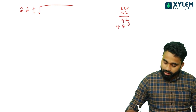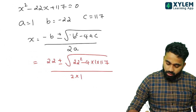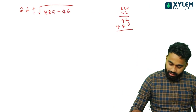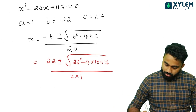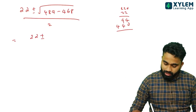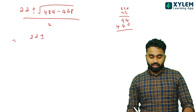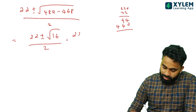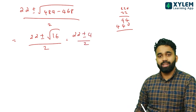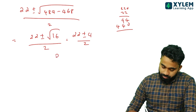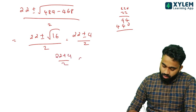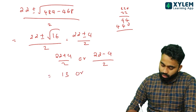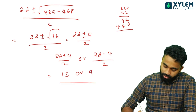22 plus or minus root of 22 squared minus 4 times 1 times the constant, all divided by 2 into 1. That gives 22 plus or minus root of 484 minus something, divided by 2. The answer is 22 plus 4 over 2 or 22 minus 4 over 2, that is 13 or 9.